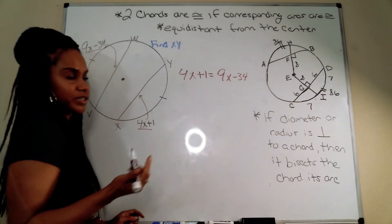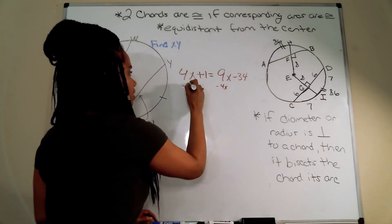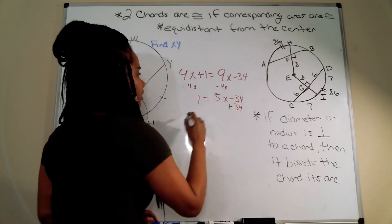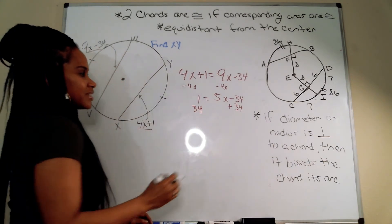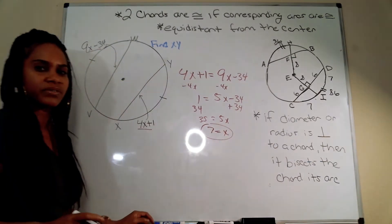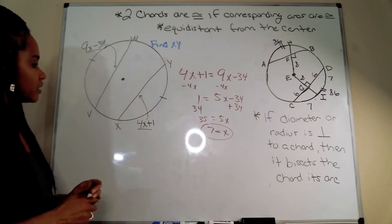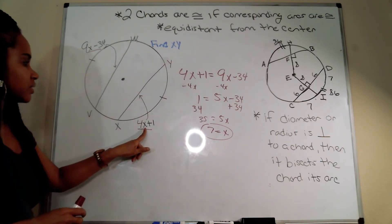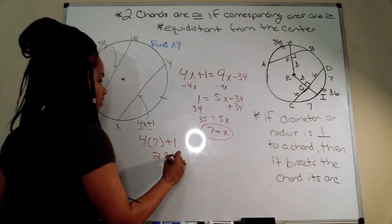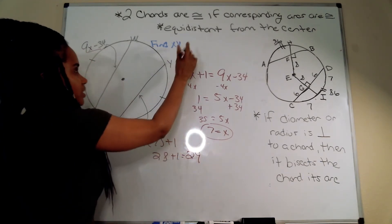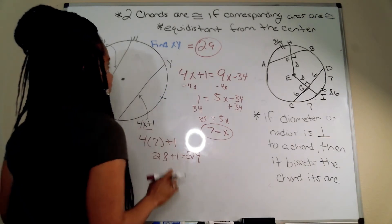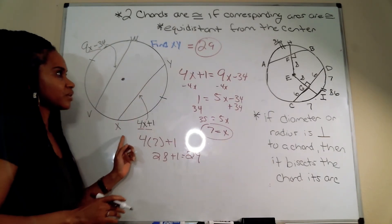Solving for x: subtracting 4x gives 1 equals 5x minus 34, then 35 equals 5x, so x equals 7. Plugging back into 4x + 1: 4 times 7 plus 1 equals 28 plus 1, which equals 29. So XY equals 29. We used the congruent arcs condition to solve this problem.